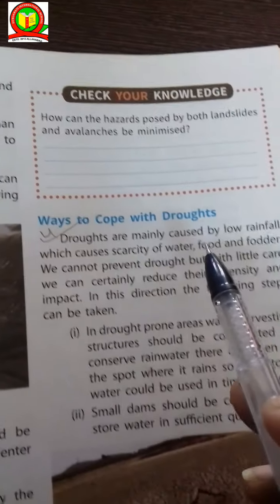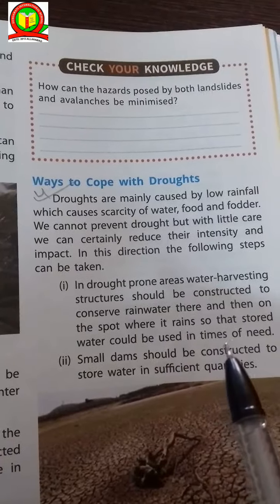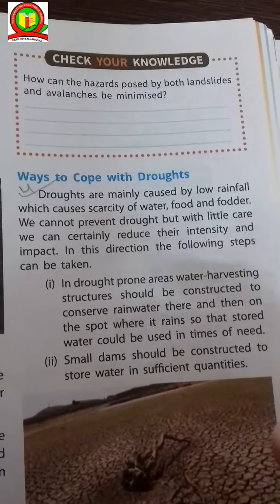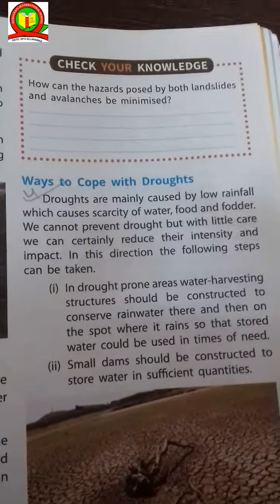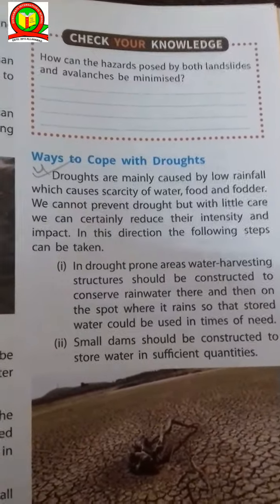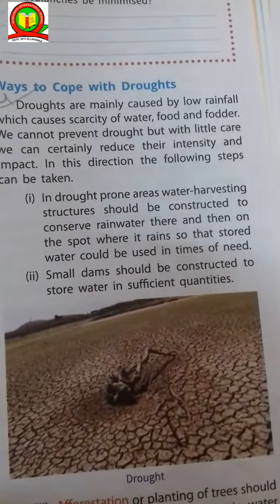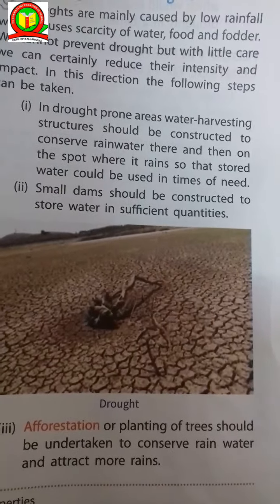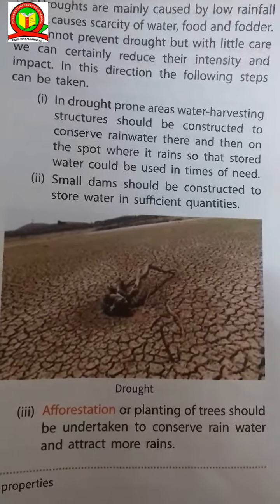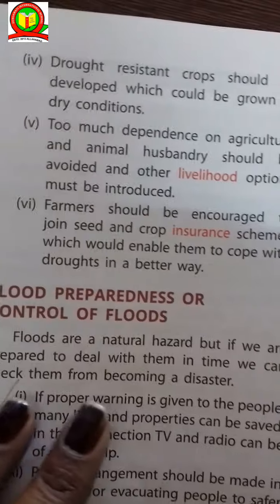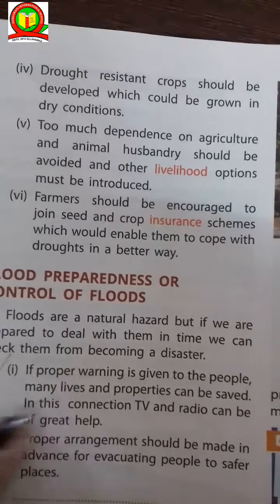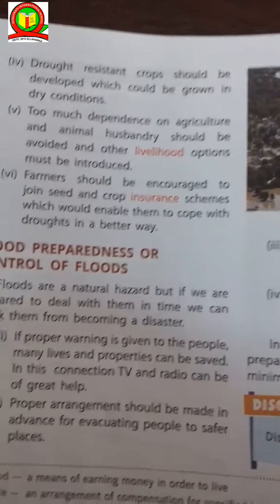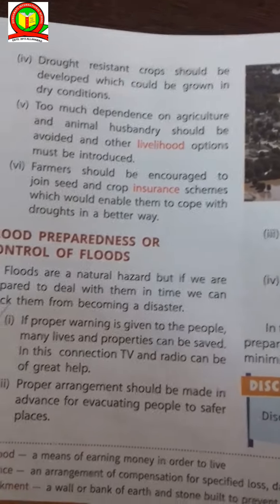Ways to cope with drought: in drought-prone areas, water harvesting structures should be constructed to conserve rainwater where it falls, so stored water can be used in times of need. Small dams should be constructed to store water in sufficient quantities. You can see it is a drought area. Afforestation — planting of trees — should be undertaken to conserve rainwater. Drought-resistant crops should be developed that can be grown in dry conditions. Too much dependence on agriculture and animal husbandry should be avoided, and farmers should be encouraged to save seeds.